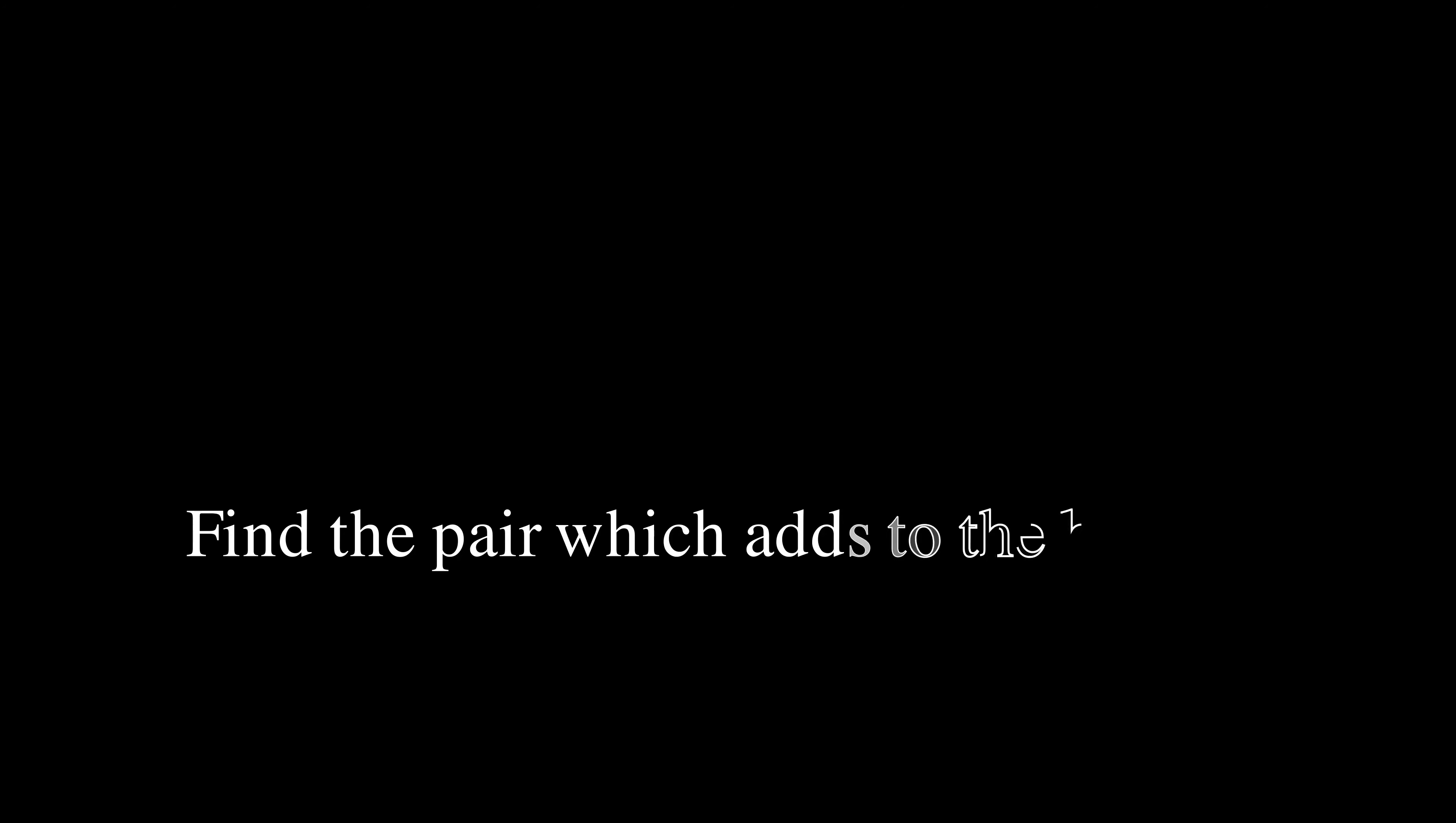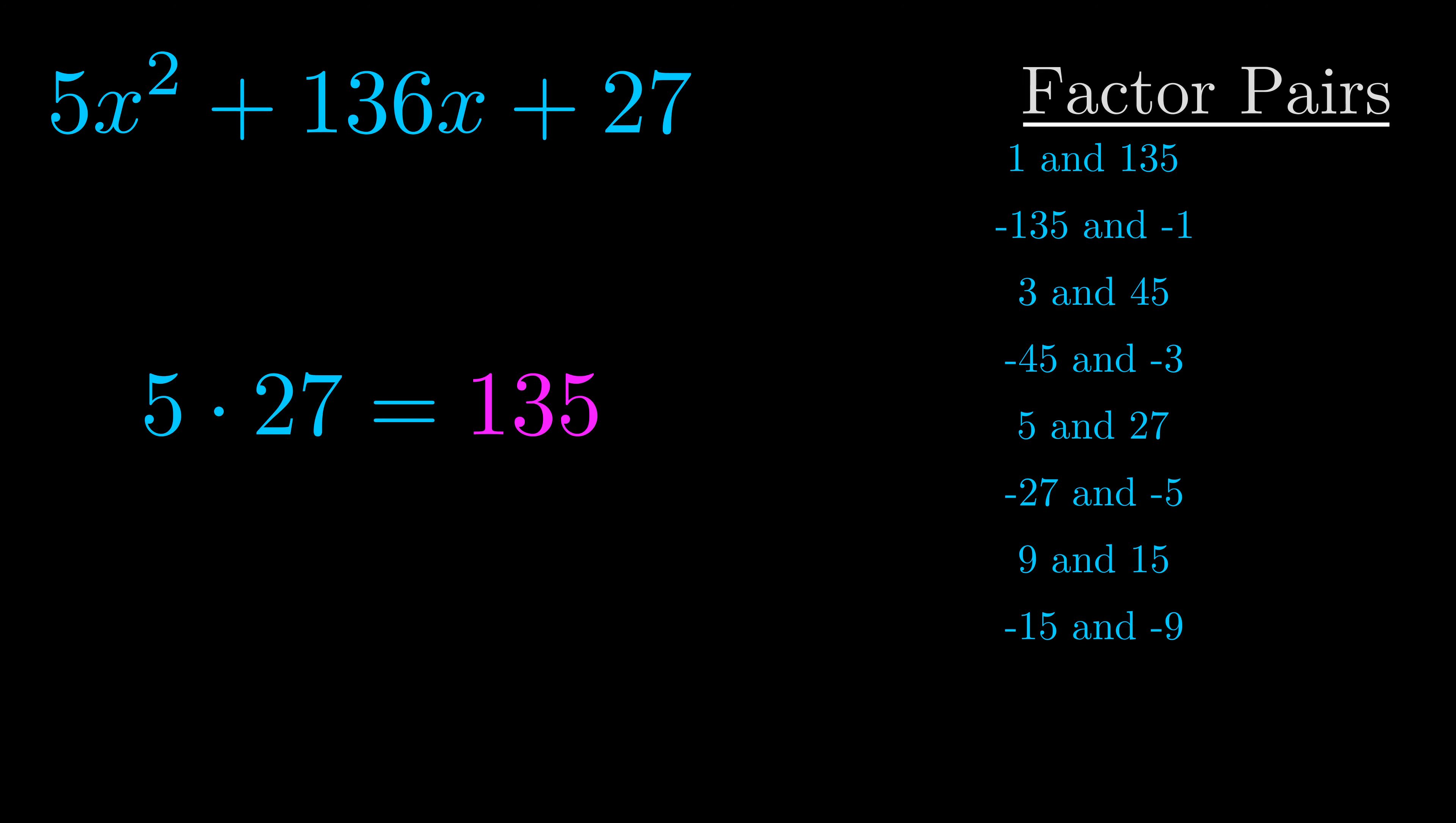The b value is the coefficient on the x term. That's the middle term, the one that we haven't done anything with yet. And really this is the only factor pair that we need.